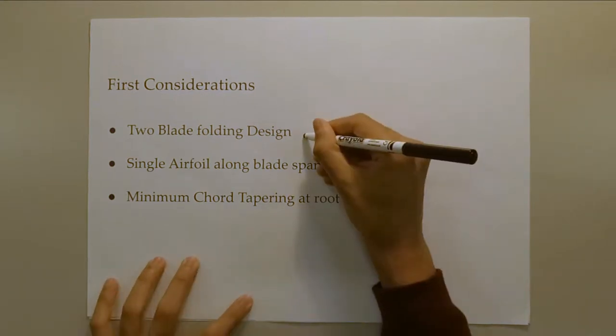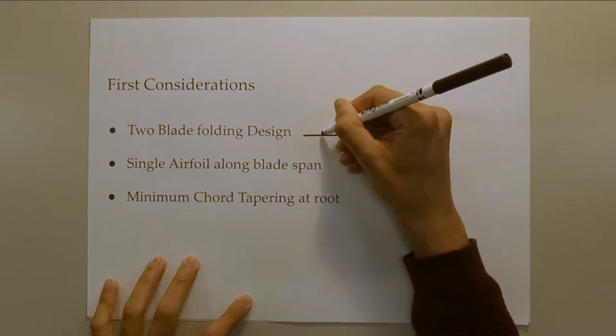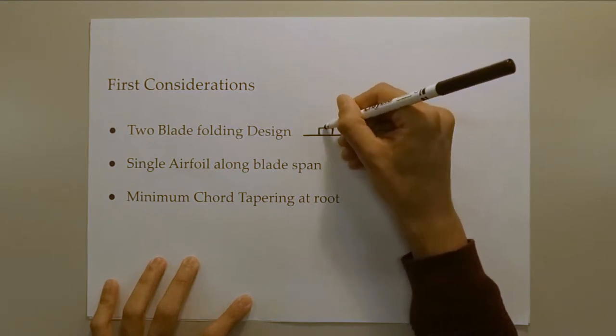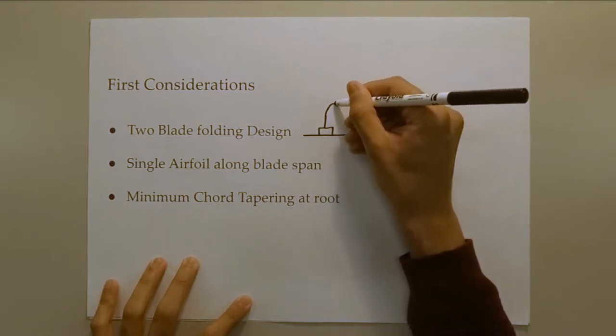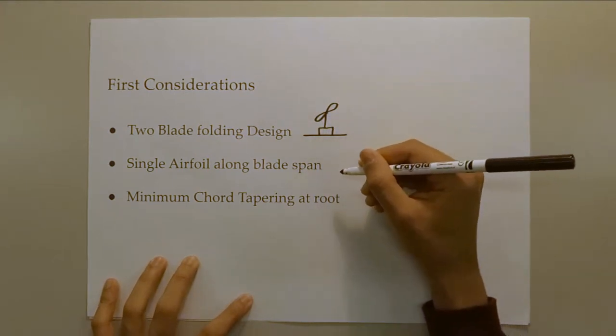It is worth noting that a three-blade design was not considered as yawing was not a consideration, and a one-blade design would need a large counterweight due to the material constraint.